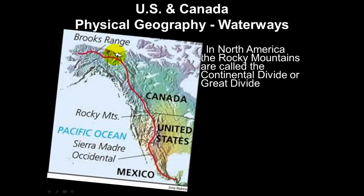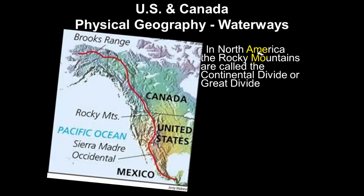Now we'll talk about some of the physical features in North America. One of the most prominent physical features runs from Alaska all the way down into Central America — it is called the Continental Divide. The Continental Divide is part of the Rocky Mountains in the United States. It runs from Alaska, through Canada, through the United States, and down through Central America. It is a chain of mountains, and in the United States we call these the Rocky Mountains.